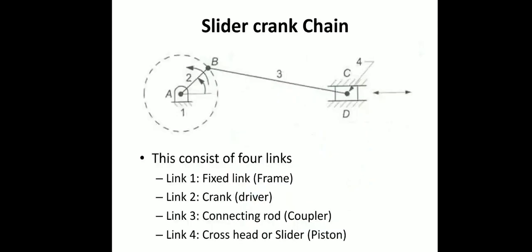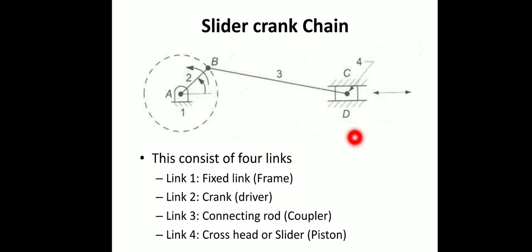Now we will discuss the slider crank chain. In the slider crank chain: link 1 is the frame, link 2 is the crank, link 3 is the connecting rod or coupler, and link 4 is the driven link — the follower — which is a slider. This is the slider crank mechanism. In a four bar mechanism there is a slider movement producing linear motion.